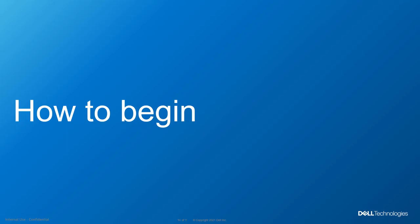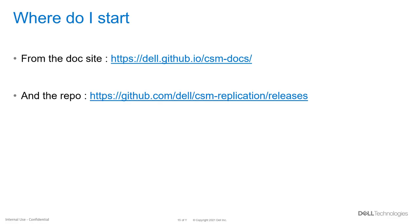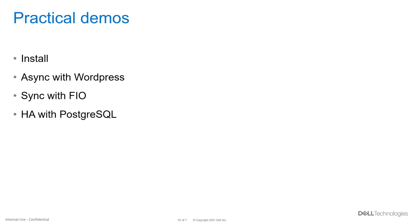So how do you get started with Dell CSM Replication? First, start from the documentation website — it is a goldmine full of details on the architecture, the different statuses available from the CRDs, the operations you can run, and the different use cases. Then you can download RepCTL and begin implementation. Coming soon are practical videos and demos on how to install the components, how to use asynchronous and synchronous replication, and how to chain different types of applications. These will be available on the knowledge transfer website.